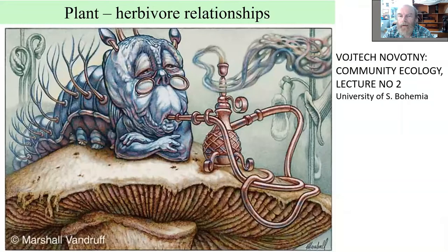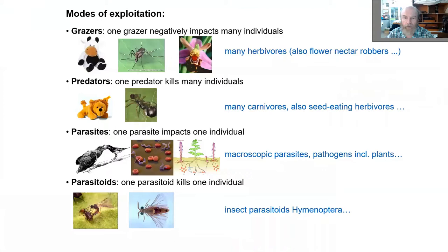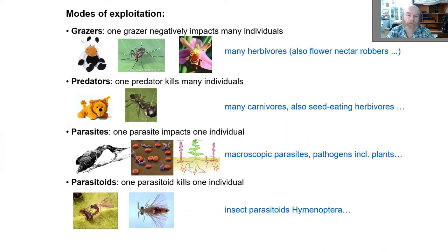Today we will start a very long chapter on herbivory. Last time we talked about parasitism as one type of ecological interaction. Today it will be plant-herbivore relationships, and it will continue next lecture as well. There are two aspects to any ecological relationship: the purely ecological and also the evolutionary phylogenetic. We will start with the ecology viewpoint and then move to the phylogenetic one.